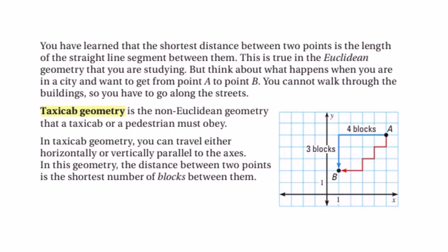Taxicab geometry is the non-Euclidean geometry that a taxicab or a pedestrian must obey. In taxicab geometry, you can travel either horizontally or vertically parallel to the axes. In this geometry, the distances between two points is the shortest distance or the shortest number of blocks between them.